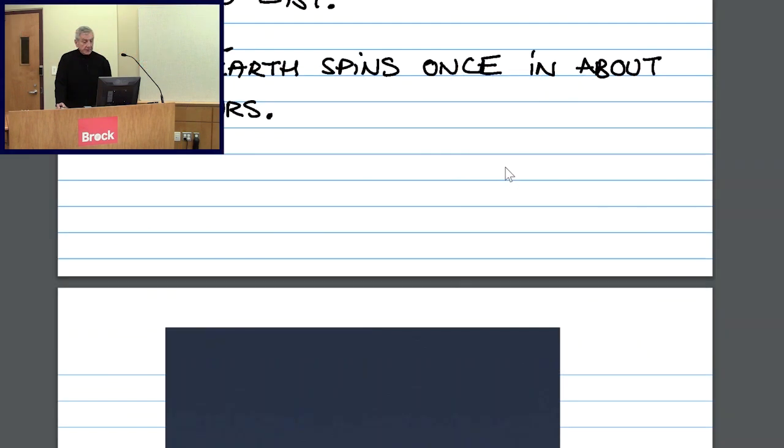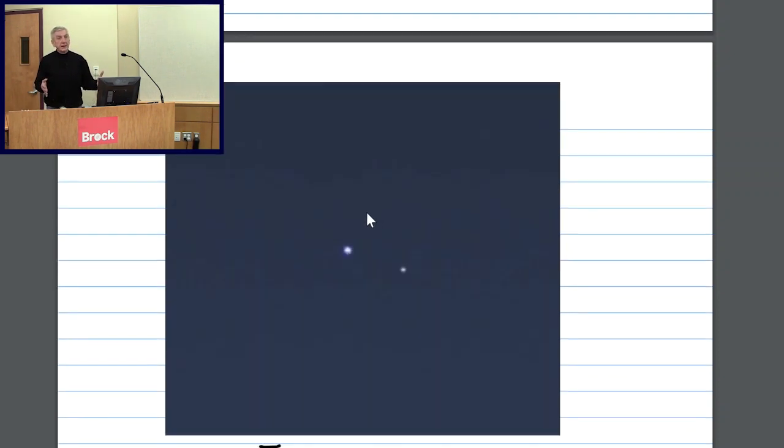So the previous image that showed just our Earth was about 16,000 kilometers wide. In our trip, we'll increase the size of the scenery by a factor of about 100 each time.